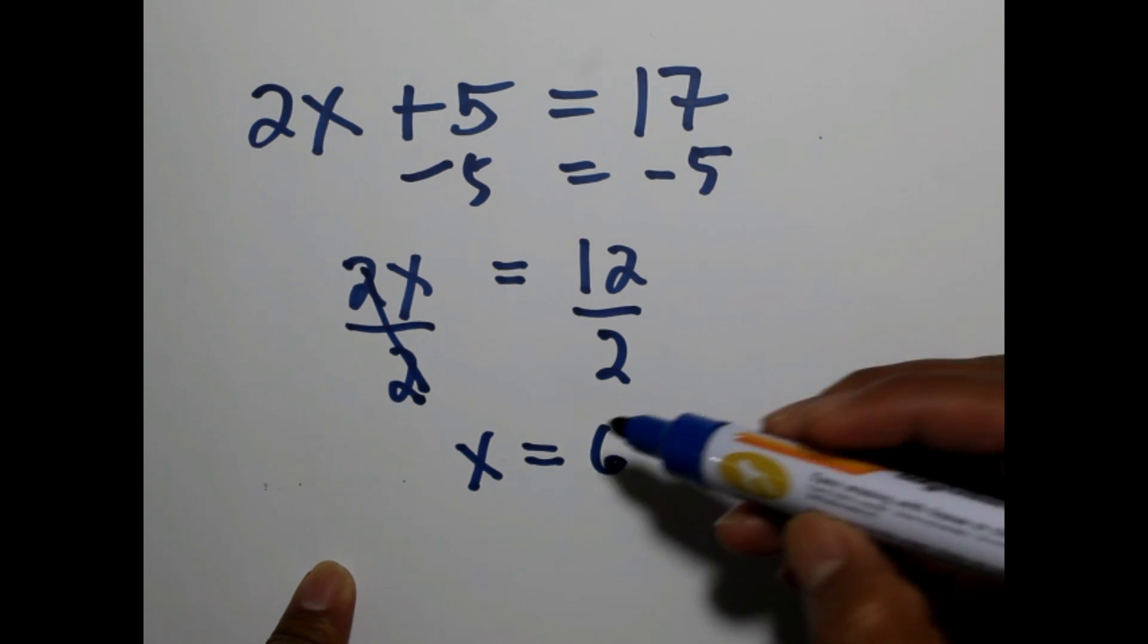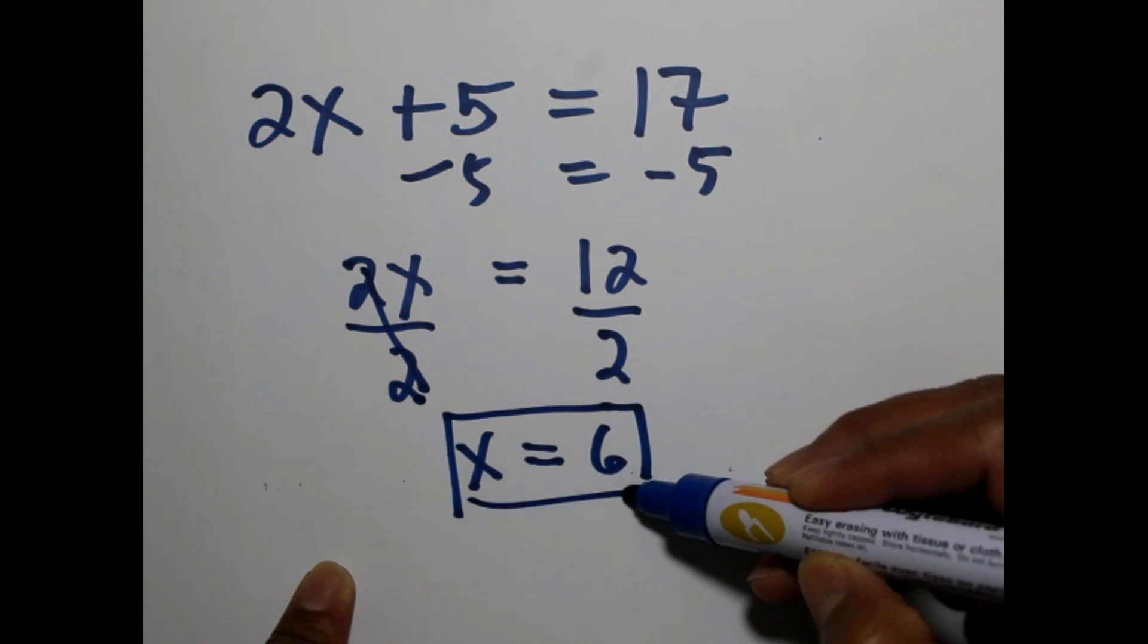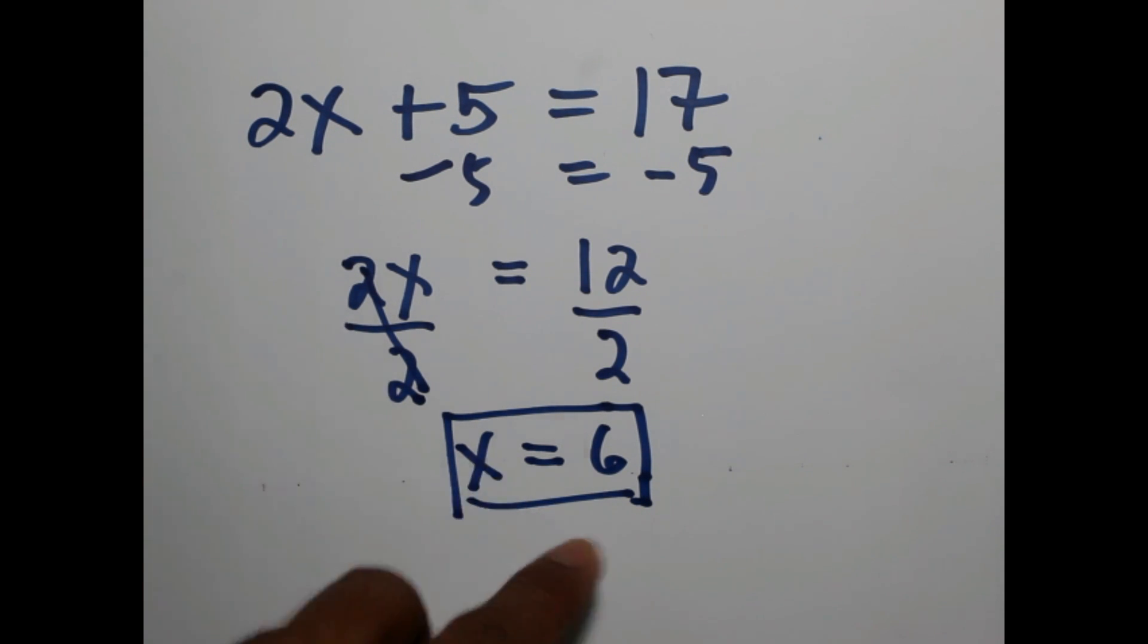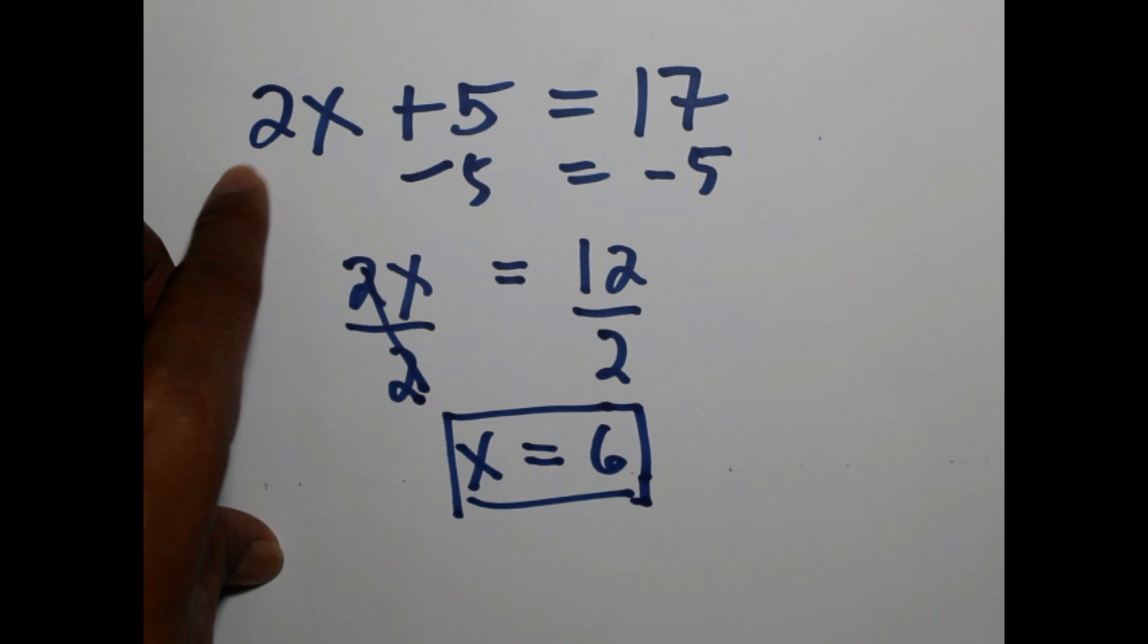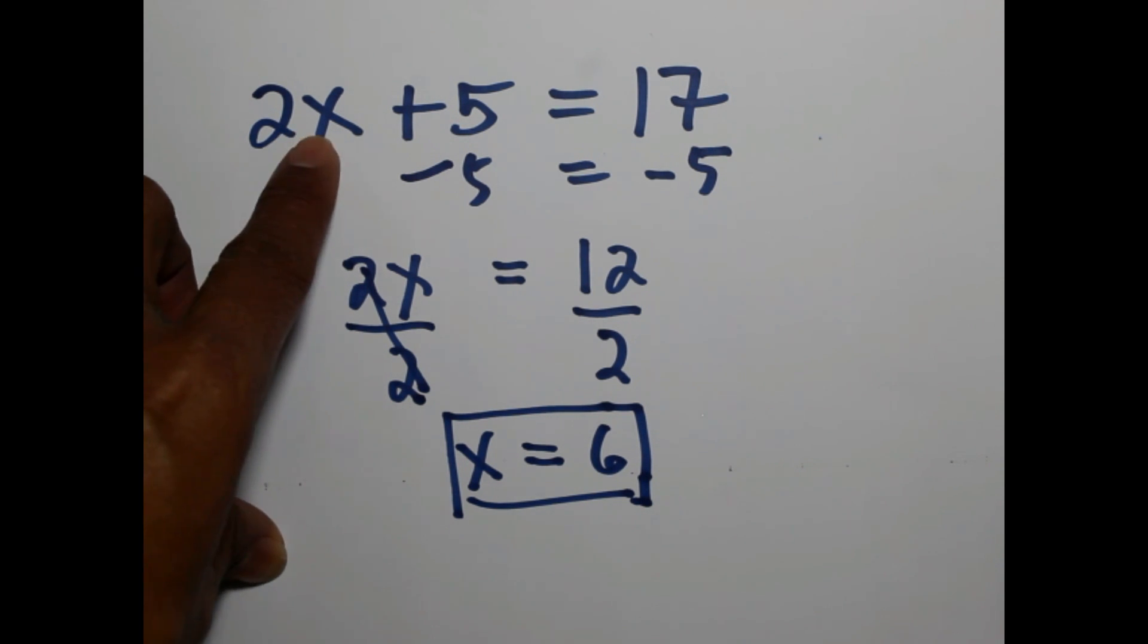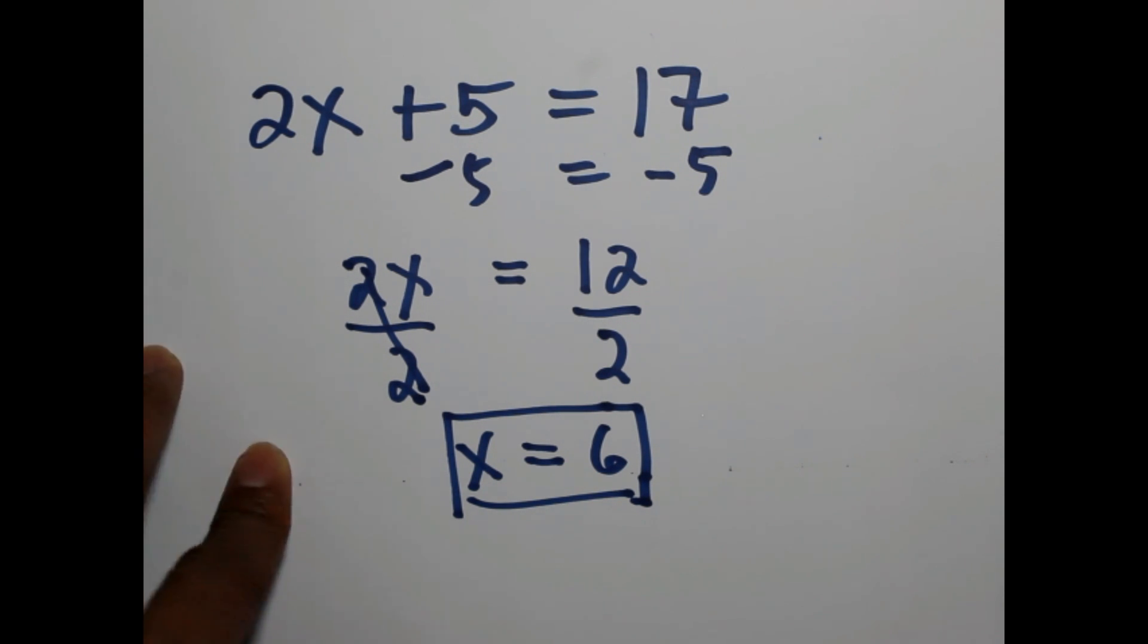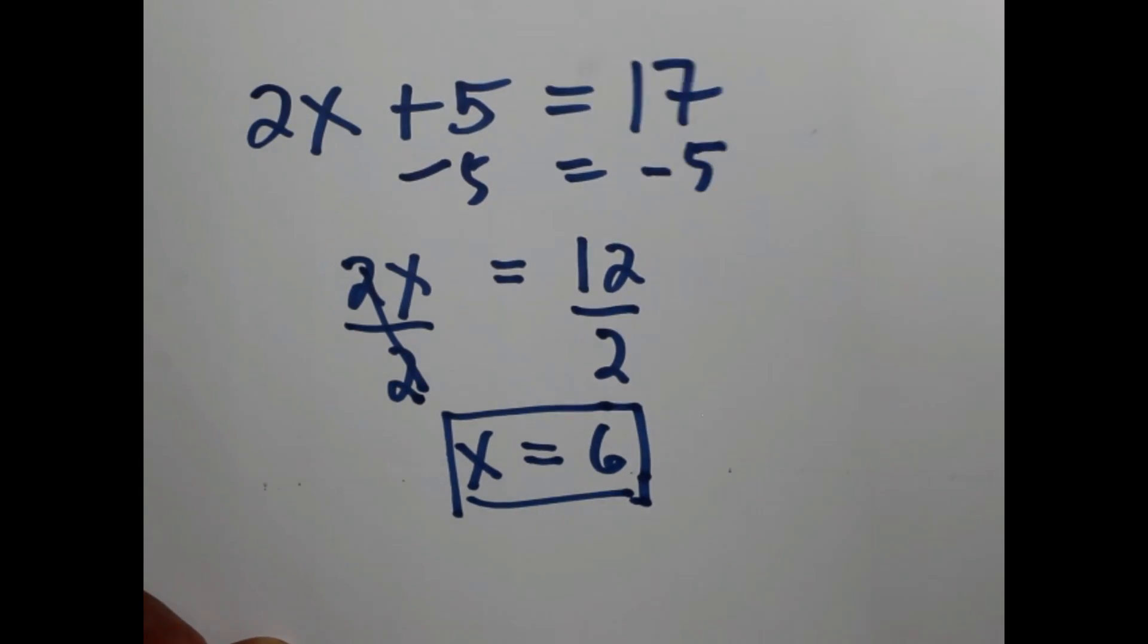Our final answer is x equals 6. We will check if your answer is correct by simply substituting 6 as the value of x to the original equation. So 2 times 6 plus 5, that's 12 plus 5 is 17. So the value of x which is 6 is true. Let's go to another example.